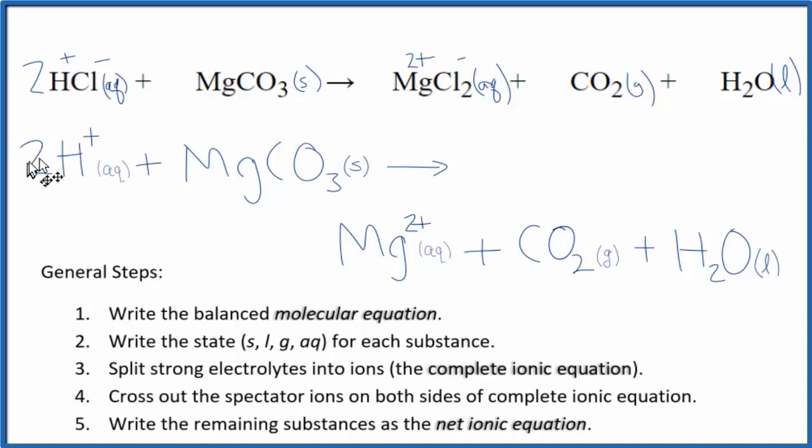You'll notice charge is conserved. We have 2 times 1 plus, so 2 plus in the reactants, and then 2 plus here in the products. And if you count the atoms up, we'll have the same number of each type of atom on both sides. So mass is conserved as well.